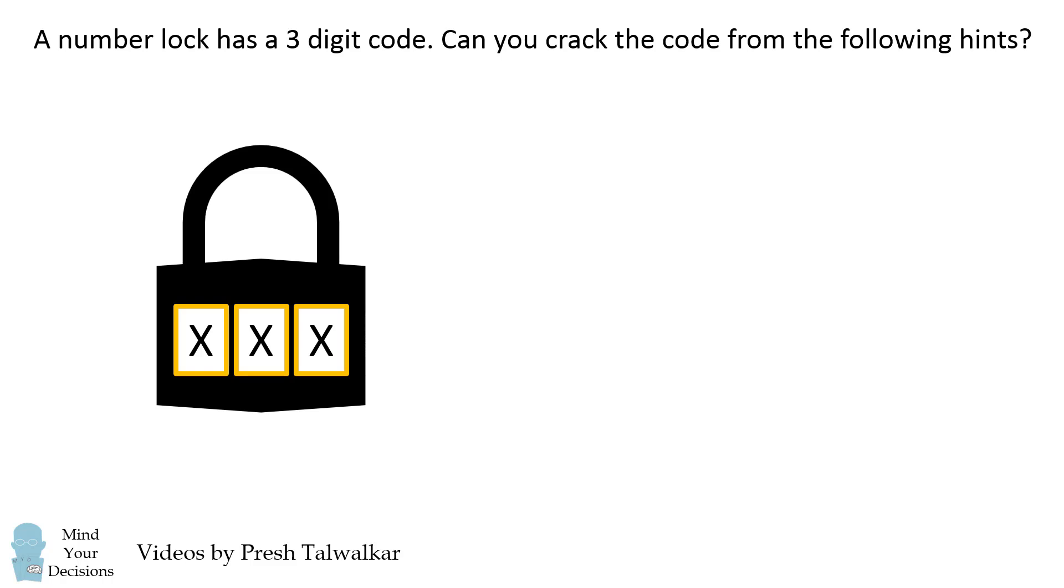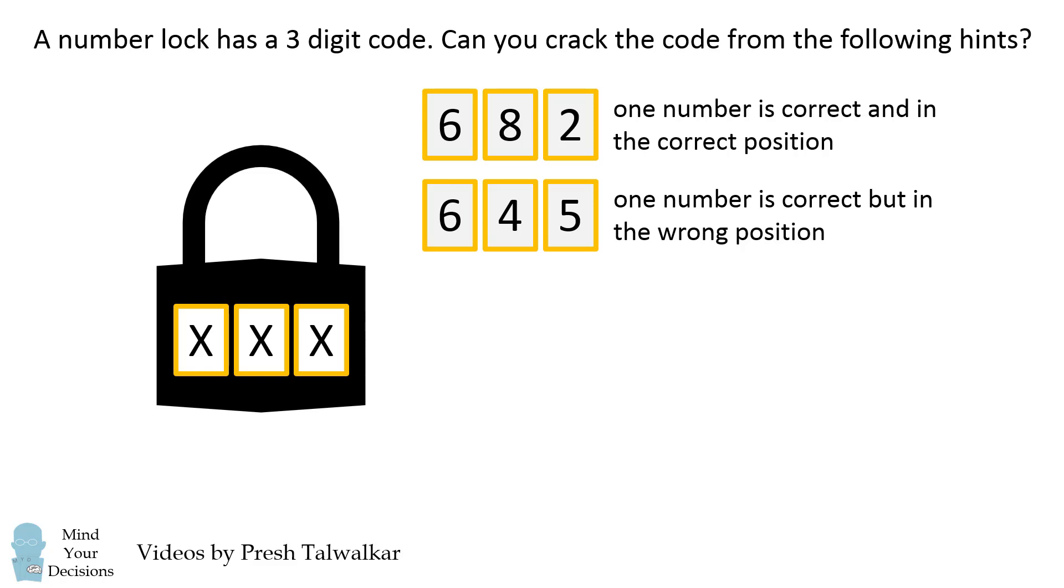A number lock has a three-digit code. Can you crack the code from the following hints? 682: One number is correct and in the correct position. 645: One number is correct, but in the wrong position.